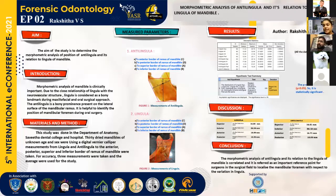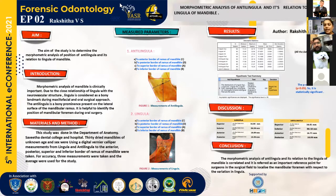The null hypothesis test showed a p-value of 0.00, which is less than 0.05; hence, the result is statistically significant. Since it is statistically significant, the morphometric analysis of antilinguella is correlated with the linguella. Therefore, the antilinguella is considered to be an important reference point for surgeons in the surgical field to identify the mandibular foramen.